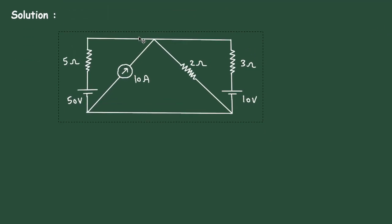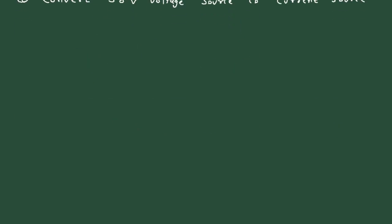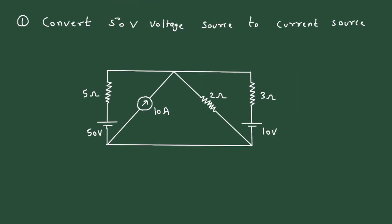Step 1: Convert the 50V voltage source to its equivalent current source. Currently this 50V voltage source is in series with the 5Ω resistor. When we convert the 50V voltage source to a current source, it will be in parallel with this 5Ω resistor. We will draw the current source in parallel with this 5Ω.